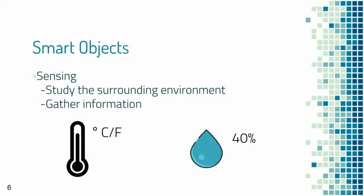These smart objects can perform sensing — they are equipped with sensors which read the environmental surroundings and return a measured value. For example, a humidity sensor that can measure the humidity of the ambient air can be a sensor on an IoT device.